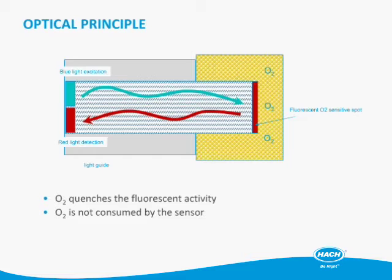With optical sensors, we use an optical principle where O2 quenches the fluorescent activity of a polymer matrix. The oxygen permeates into the polymer, we hit that polymer with a blue light that excites the fluorescent material, and we get a red response back to the sensor. The O2 quenches that fluorescence, and we measure the response back on a detector.